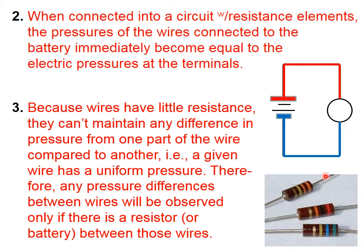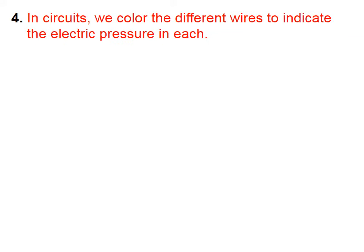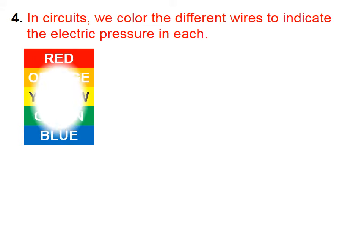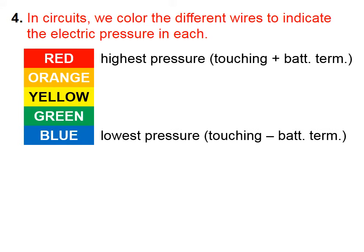Therefore, any pressure differences between wires will be observed only if there is a resistor or battery between those wires. This picture in the lower right shows some carbon resistors. Wires have uniform pressures. In circuits, we color the different wires to indicate the electric pressure in each. Red is the highest pressure, touching the positive battery terminal. Blue is the lowest pressure, touching the negative battery terminal.